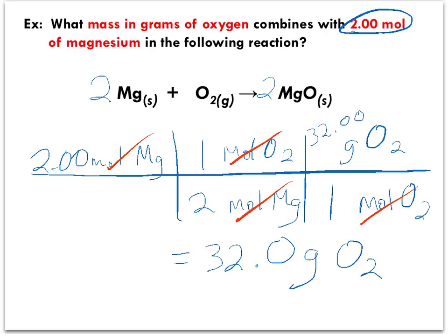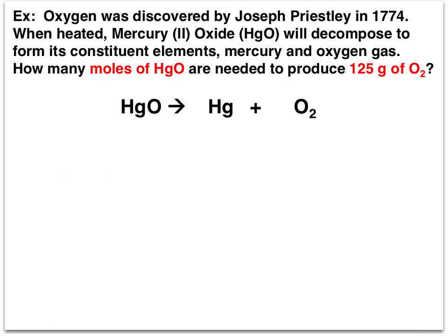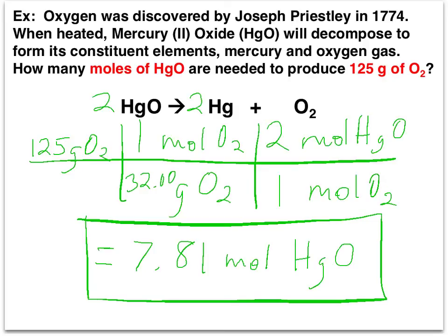So were you able to follow that? If not, go back a few slides and watch again. Here is an example for you to work out on your own. Your beginning substance is the mass of oxygen, 125 grams of oxygen. You are trying to solve for moles of mercury oxide. This will be a three step problem going from grams to moles. Did you get 7.81 moles of mercury oxide?